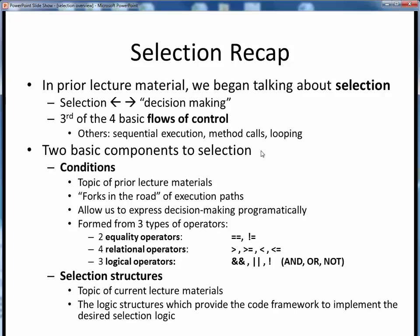There are two basic components needed to implement selection. The first one is conditions. Recall that conditions simply represent forks in the road in any program execution path, and they allow us to express true-false decision-making programmatically.